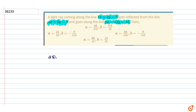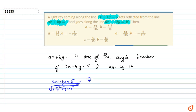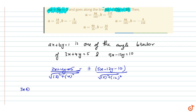Since ax + by = 1 is the reflector, it must be one of the angle bisectors of 3x + 4y = 5 and 5x - 12y = 10. So we write: (3x + 4y - 5) / √(3² + 4²) = ±(5x - 12y - 10) / √(5² + 12²). This gives us either (3x + 4y - 5)/5 = (5x - 12y - 10)/13.